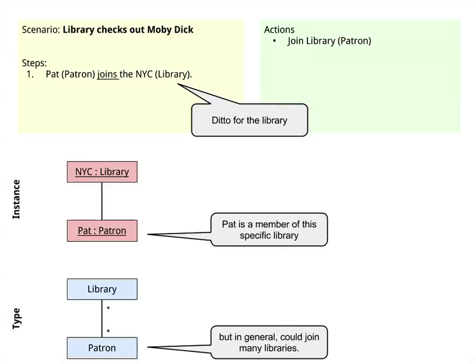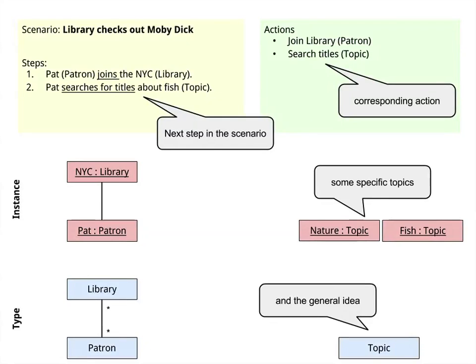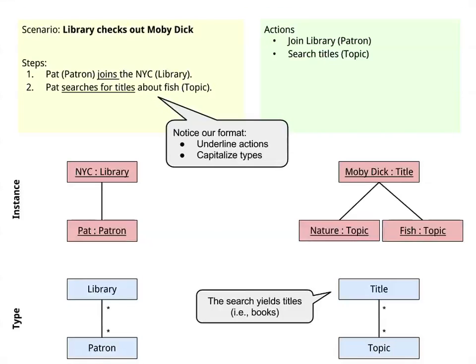Similarly, you can do the same thing with the nouns. I notice we've got Pat here in the scenario, and I draw in the red box that corresponds to Pat. We also say that Pat is a particular kind of thing — in this case, a patron. So there's the general case, the specific one, and the scenario, and I'm stitching them together, building this model from the scenario. I notice that there's a library, and I link the library and Pat together in the instances, and show how libraries and patrons relate to each other. The next step is that Pat is going to search the titles in the library for books about fish, so I add nature topic and fish topic as examples — and the general idea is that there's a topic out there.